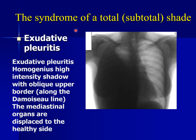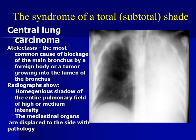Exudative pleuritis presents as a homogeneous, high-intensity shadow with an oblique upper border along the Damoiseau line, and the mediastinal organs are displaced to the healthy side. The syndrome of total shade in a patient with central lung carcinoma shows atelectasis — the most common cause being blockage of the main bronchus by a foreign body or tumour growing into the lumen.